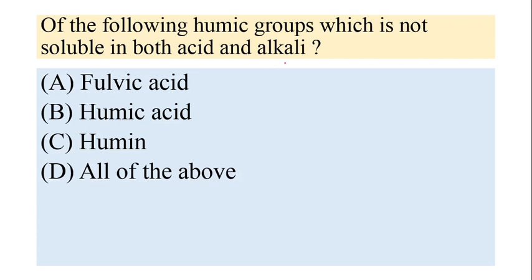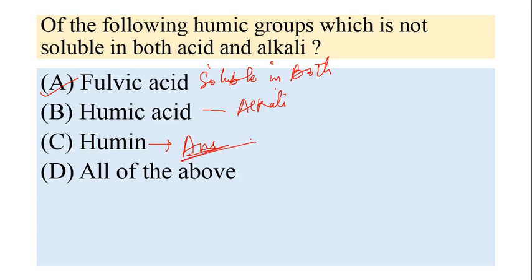Out of the following humic groups, which is not soluble in both acid and alkaline? Fulvic acid is soluble in both acid and alkaline. Humic acid is soluble only in alkaline. Humin is insoluble in both acid and alkaline — so the answer is humin. This question could also be repeated as: which one is soluble in both acid and alkaline? — the answer would be fulvic acid. If soluble only in alkaline — the answer is humic acid.